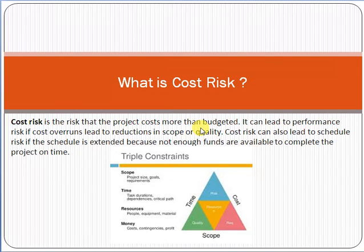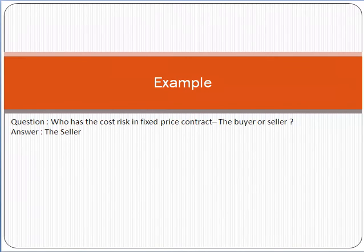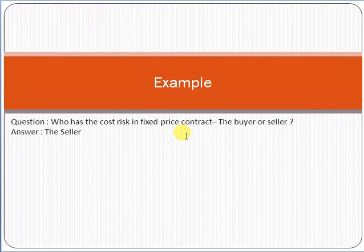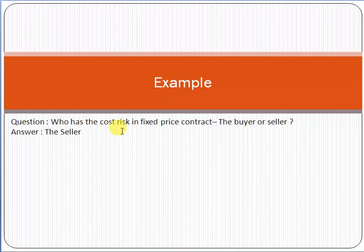Let me give you a very simple example — a very popular question in the Project Management Body of Knowledge and the Rita Mulcahy book: who has the cost risk in a fixed price contract — the buyer or the seller? The answer is the seller. This is also a tip: you may see this question in the PMP exam. Who has the cost risk in a fixed price contract? The answer is the seller.